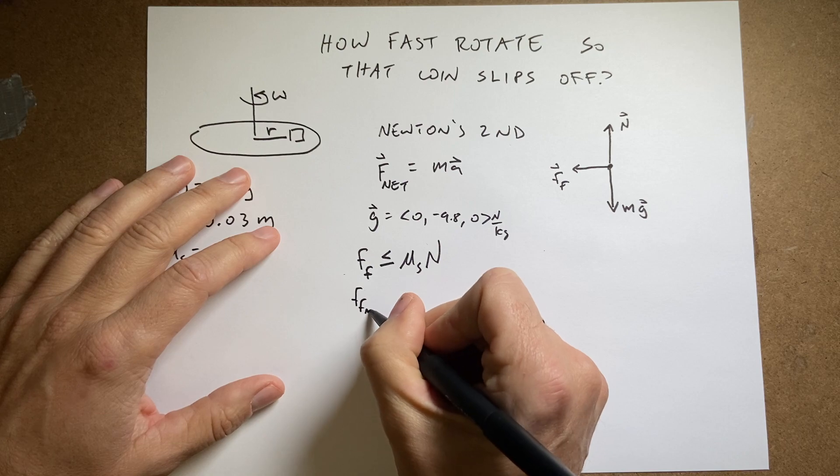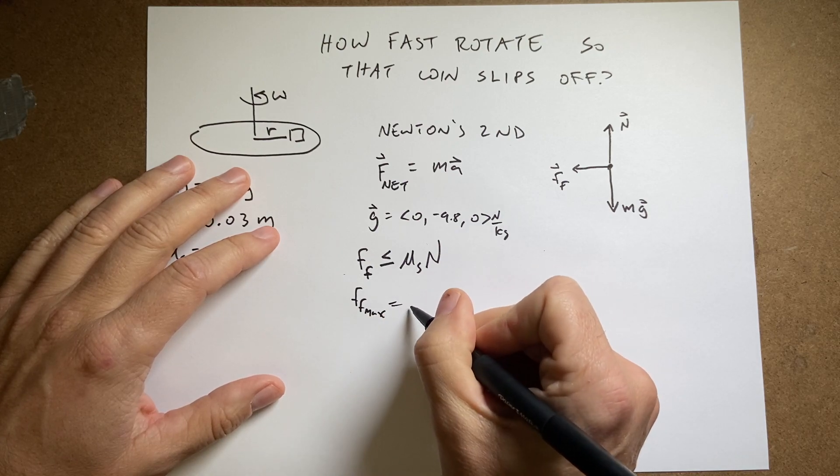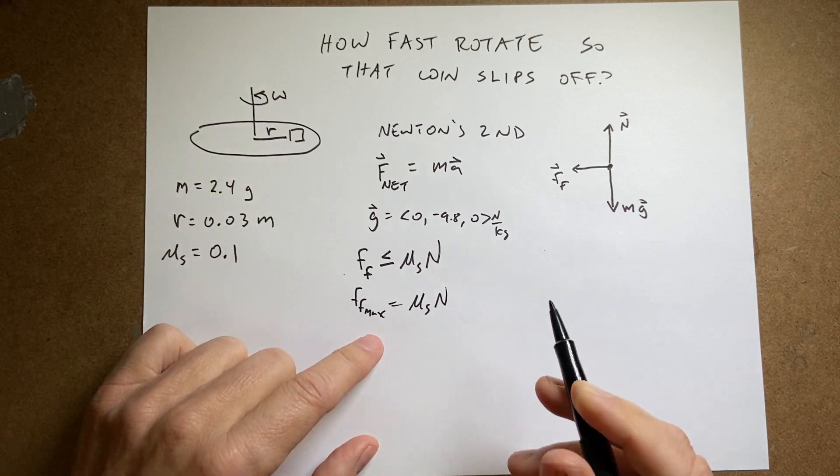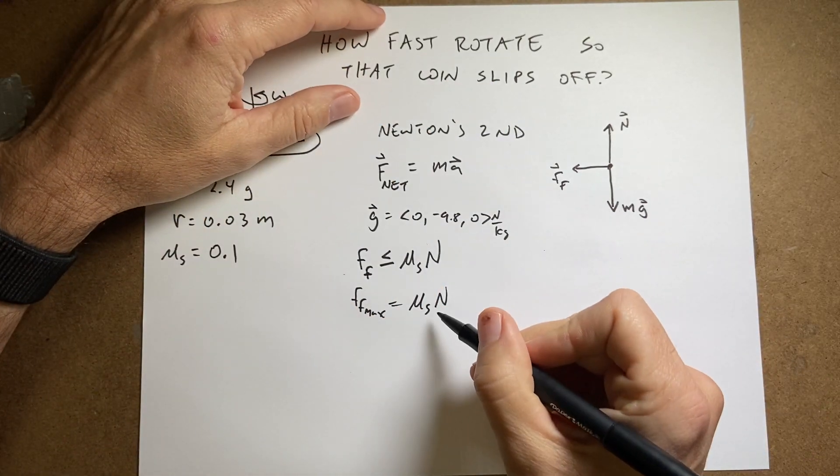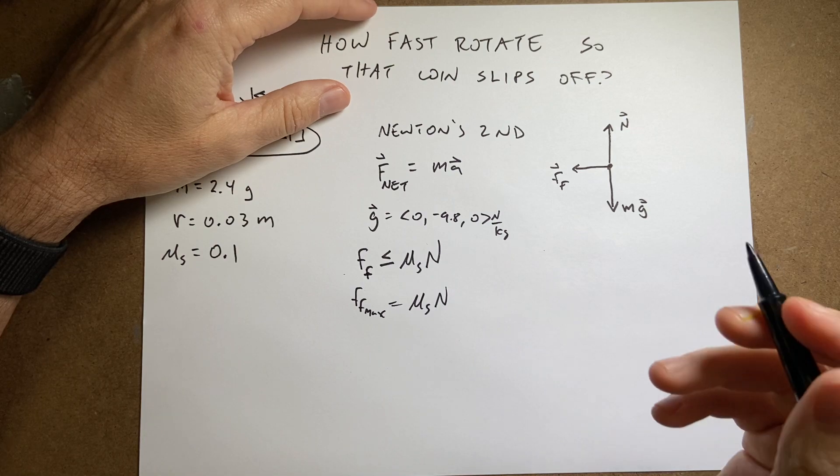So F friction max is equal to mu s times n. So the harder you push those two surfaces together, the greater the frictional force. And I could talk about friction forever.